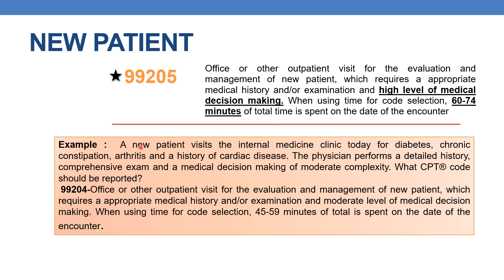A new patient visits the internal medicine clinic for diabetes, chronic constipation, arthritis, and history of cardiac disease. The patient has a detailed history, comprehensive exam, and medical decision making of moderate complexity. Since the MDM is of moderate complexity, the appropriate CPT is 99204, which requires appropriate medical history and examination and moderate level of MDM.